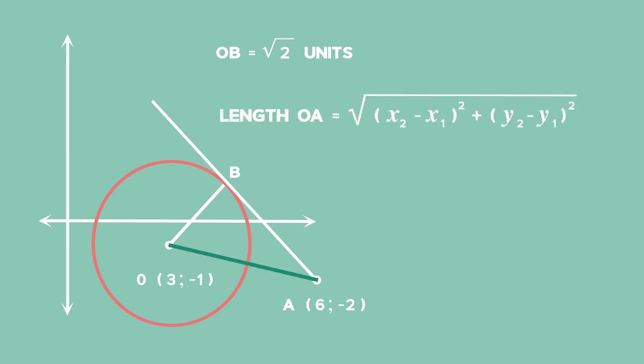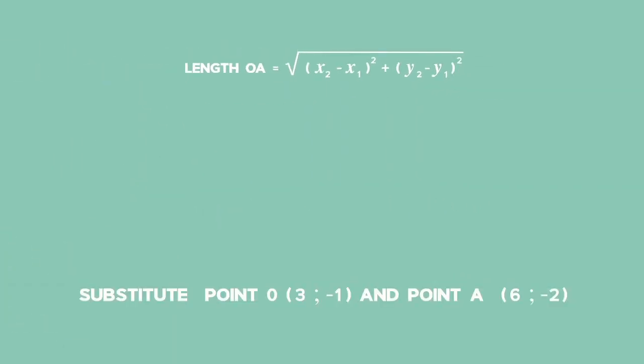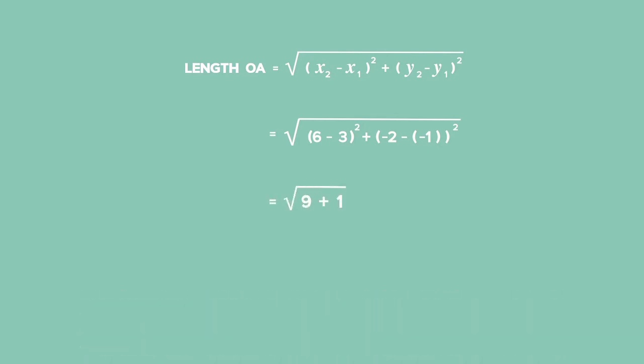Substitute point O(3, -1) and A(6, -2) into the distance formula. Simplify and get an answer of square root of 10.